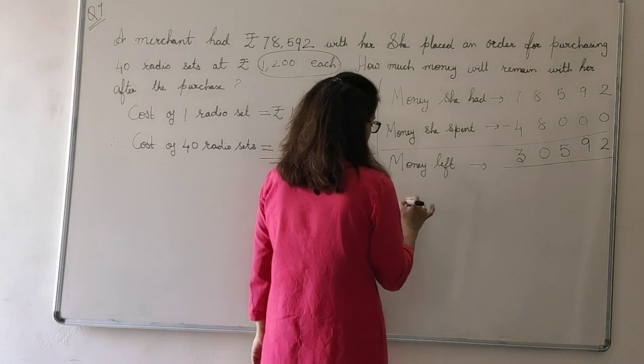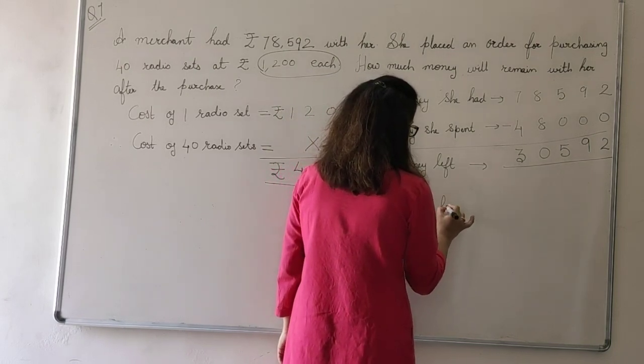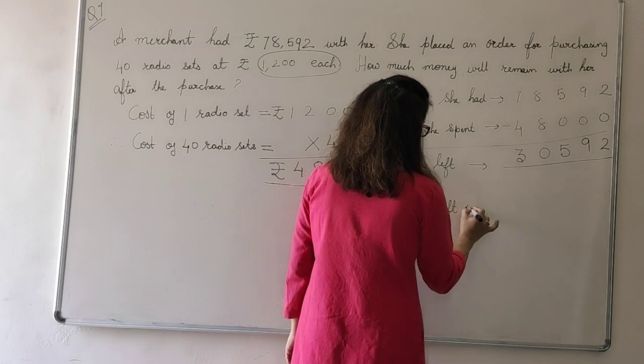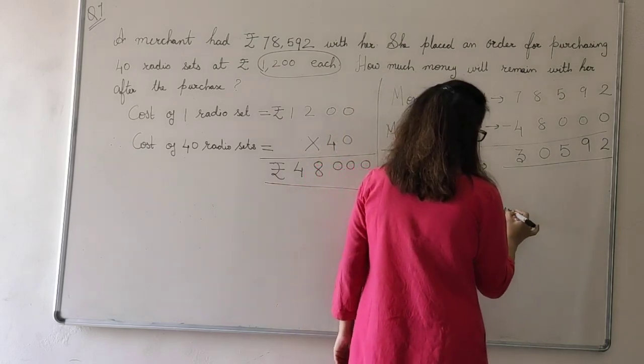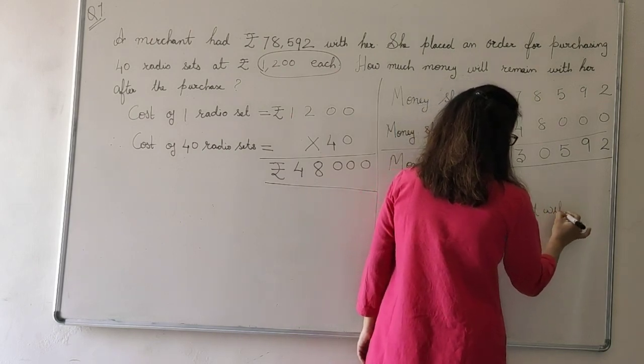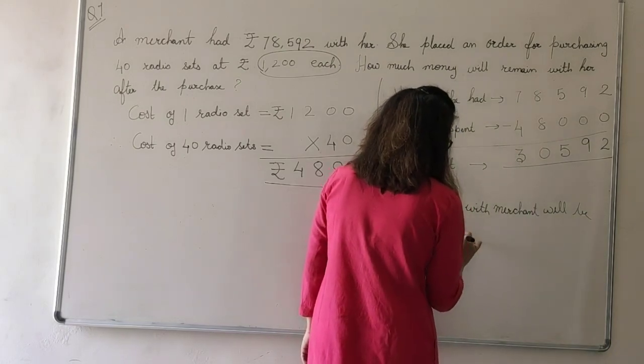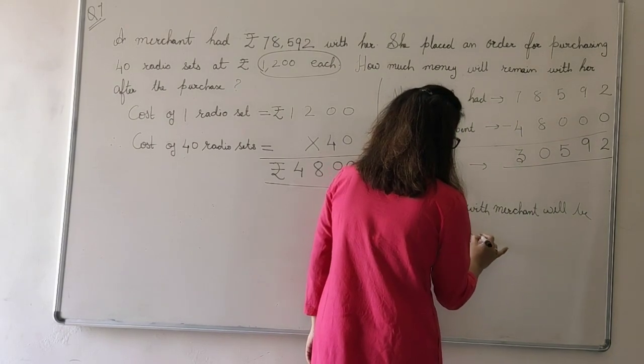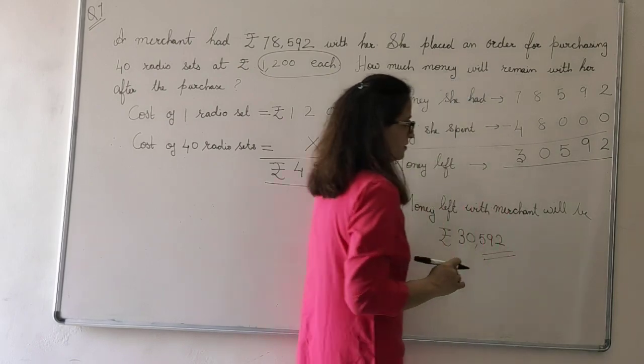So, the concluding statement will be money. Therefore, money left with merchant will be rupees 30,592. Thank you.